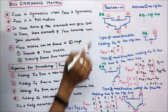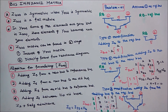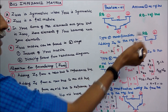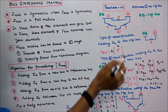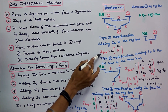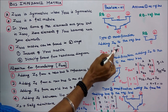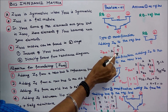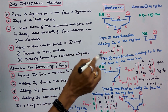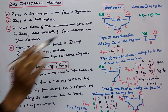Type 1 modification is adding ZB to the reference bus. This is the reference bus and this is the new bus we are going to add. The element is 5. Therefore Z bus is equal to [5], that is Z22 is equal to 5. That is the Type 1 modification.